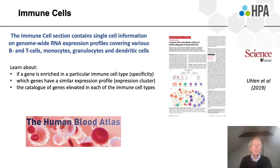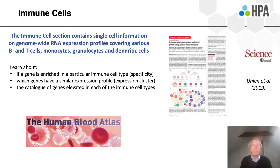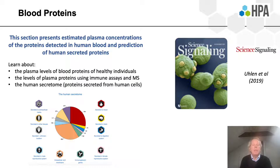The immune cell section contains single cell information on expression profiles covering a lot of different immune cells: B cells, T cells, monocytes, granulocytes, and dendritic cells. The blood protein section contains information about plasma concentrations of proteins detected in human blood, and also an updated version of the prediction of all proteins secreted from human cells and tissues.